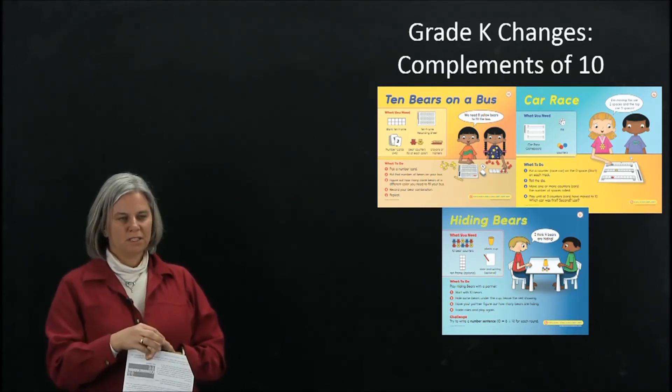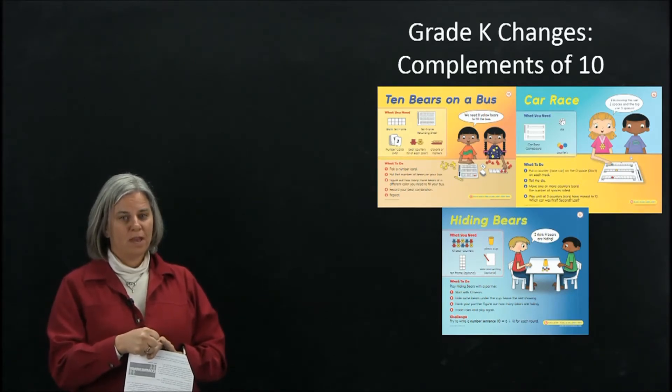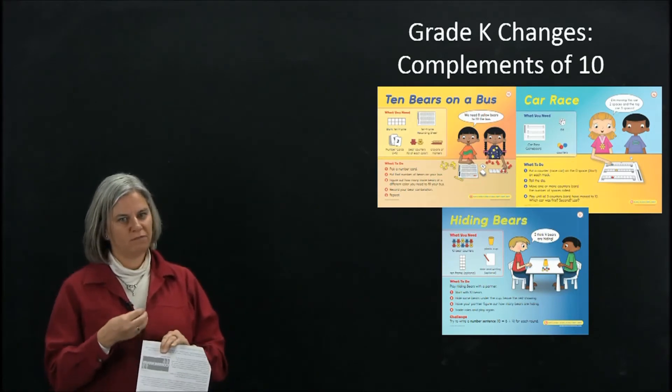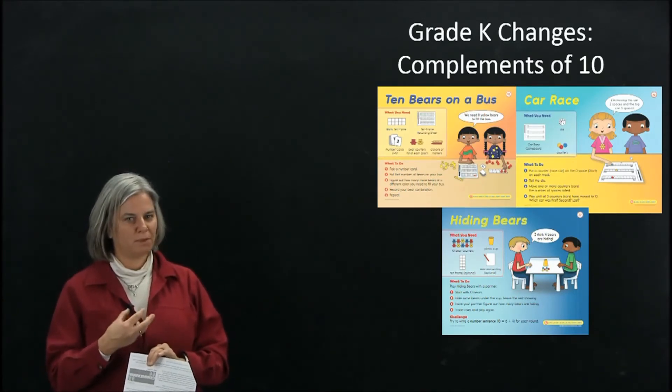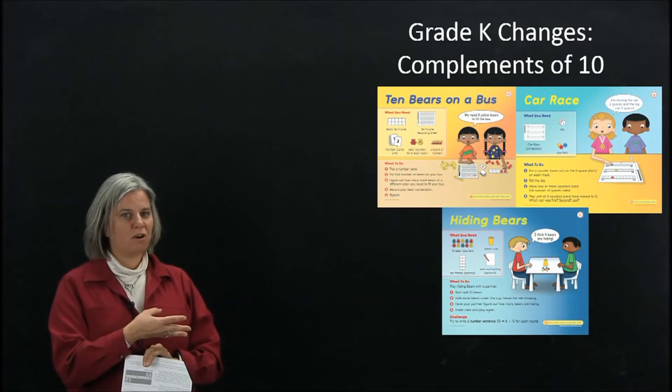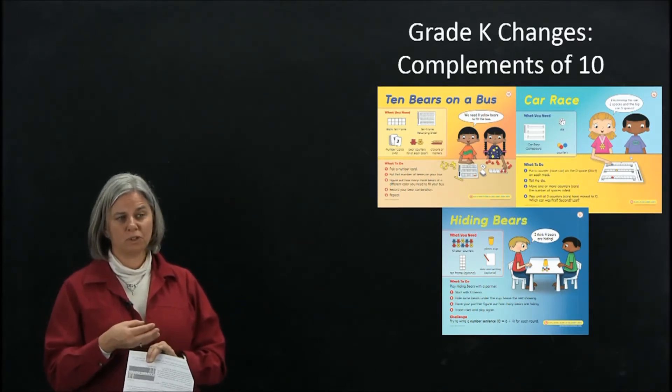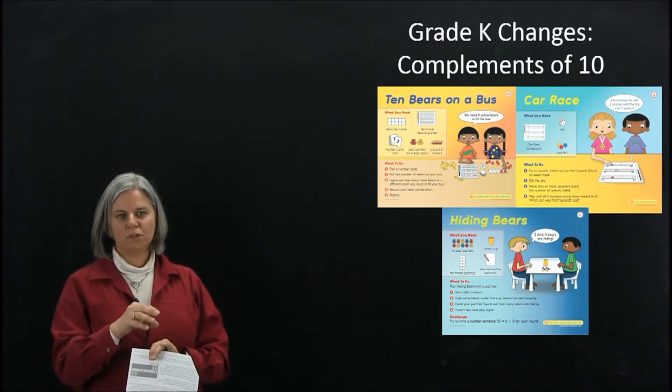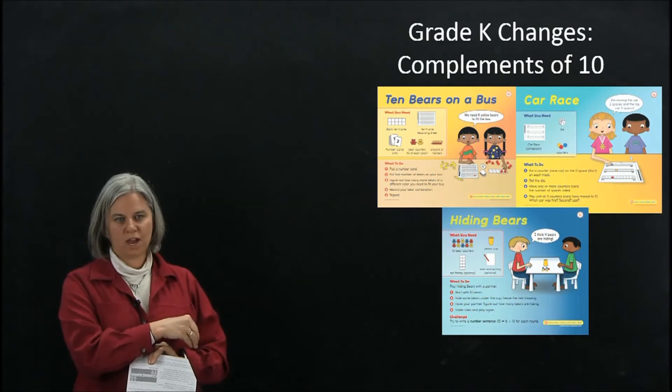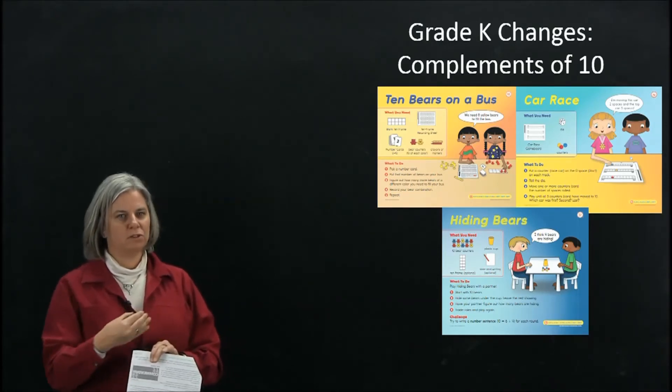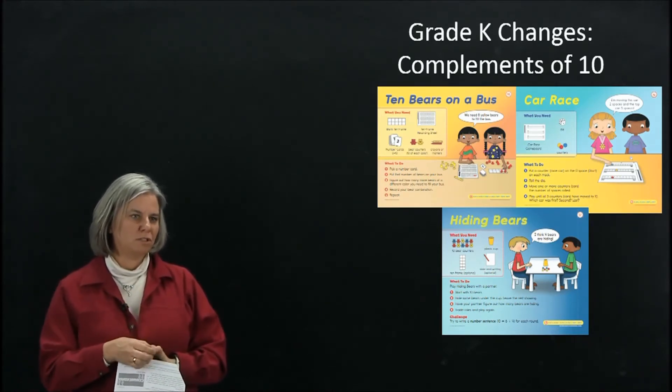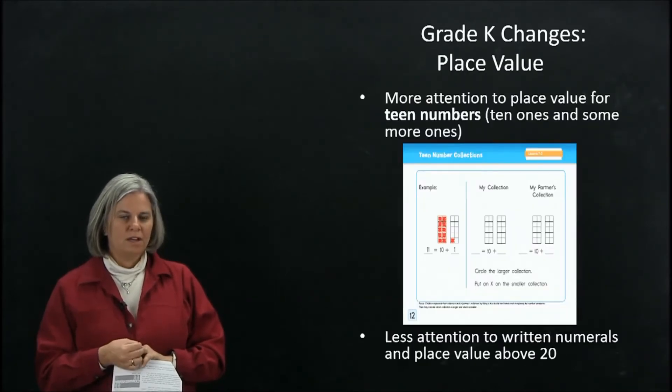Hiding Bears is a little bit more abstract. It comes in the middle of the year. Kids put a certain number of bears in a cave under a cup, and based on how many are showing, they figure out how many more to 10. Some kids will still use ten frames to help them figure that out, and some kids will not because they'll start to have memorized that. Then in section 8, which is the second to last section, is Car Race, a much more abstract game but still working on complements of 10. Kids have to split a dice roll across multiple cars moving on a track and try to get to a full 10. It's a cooperative game but represents the progression of this skill across the year.